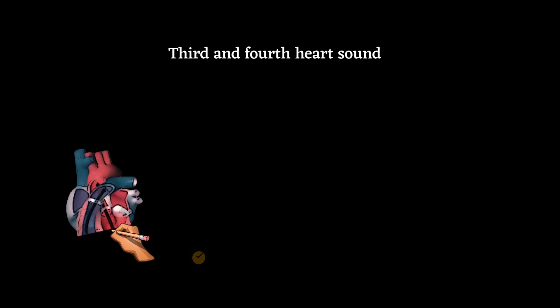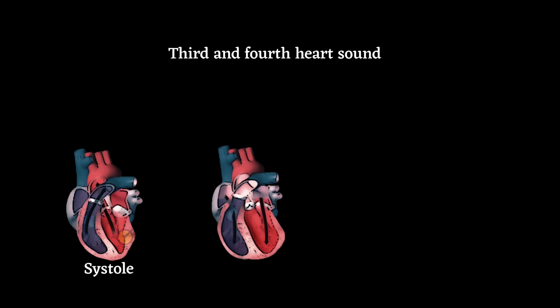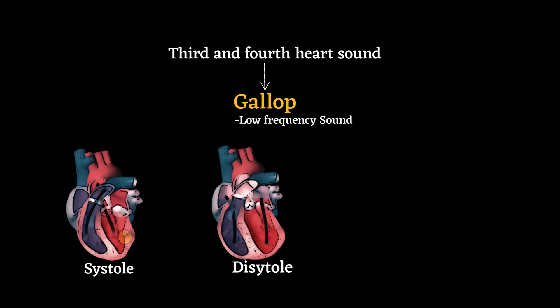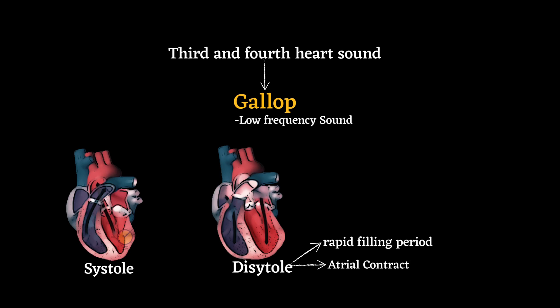There is also a third and fourth heart sound, and because of their rhythmic timing, S3 and S4 are called gallop loops. Gallop loops are low frequency sounds associated with diastolic filling. Relatively rapid ventricular filling occurs during two divisions of diastole: the rapid filling period following opening of atrioventricular valves, and the period of atrial contraction. Two types of gallop loops exist: rapid filling or ventricular gallop S3, and atrial gallop S4 respectively. Both are diastolic in timing.